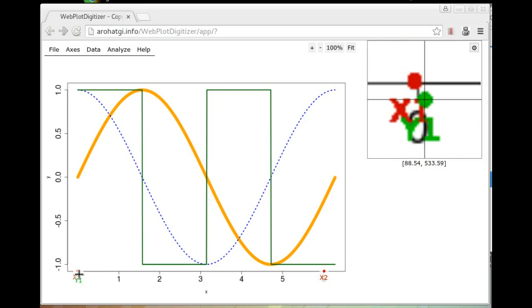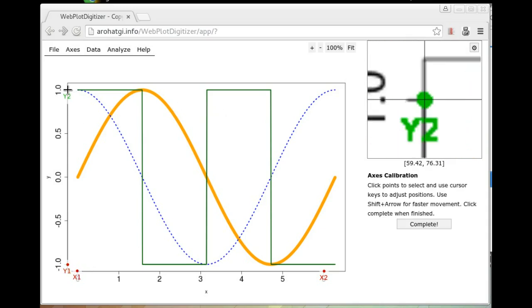You can also use the keyboard cursor keys for finer control and shift and cursor will help you move points a little bit faster. So on the X axis, I have selected zero and six and on Y I'm selecting minus one and one. You can also come back and fix the points if needed. Once you're satisfied, click complete.